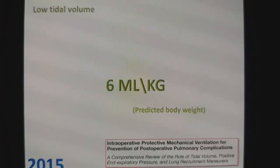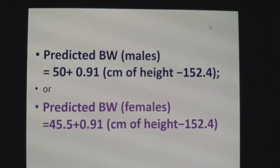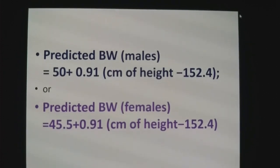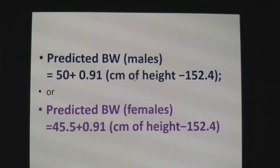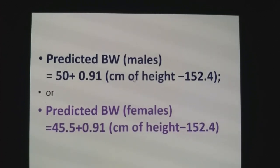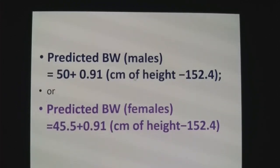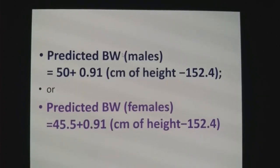What is predicted body weight? Predicted body weight can be easily calculated by this formula. For males: 50 plus 0.91 multiplied by (height in centimeters minus 152.4). For easy calculation, we will keep this as 150. Those using ideal body weight — suppose a patient weighs 200 kg — what should be the tidal volume as per ideal body weight? 200 into 6 is 1200. How many of you are using 1200? So that is the wrong approach. It should be as per predicted body weight, and this formula depends on patient height, not ideal body weight.